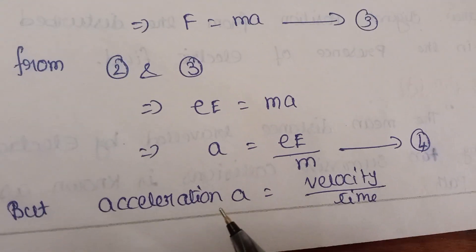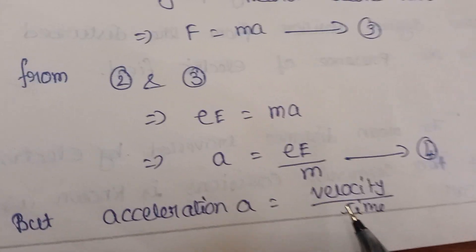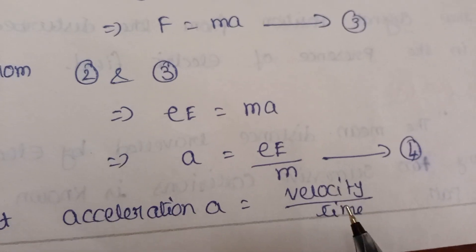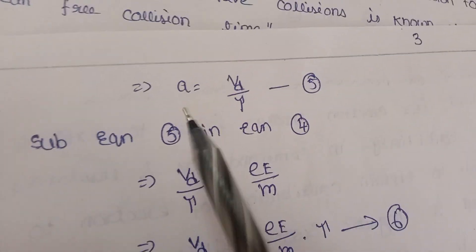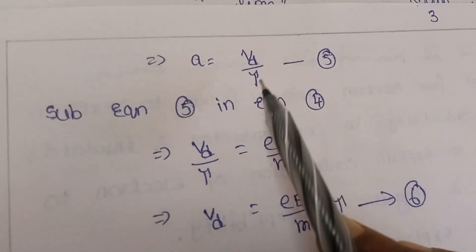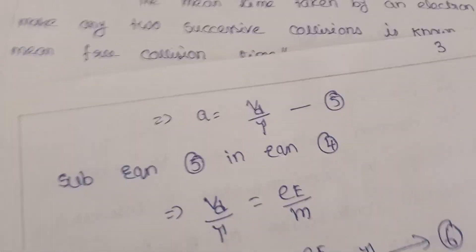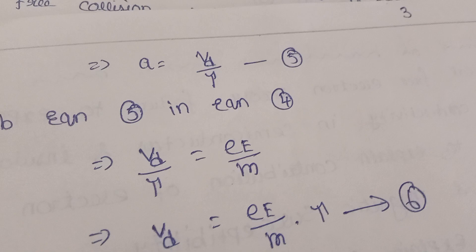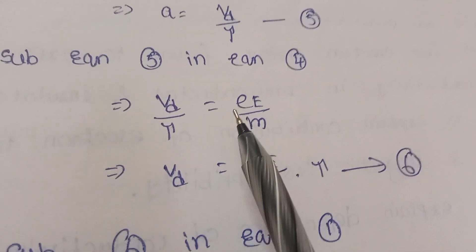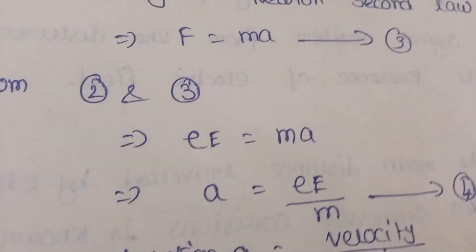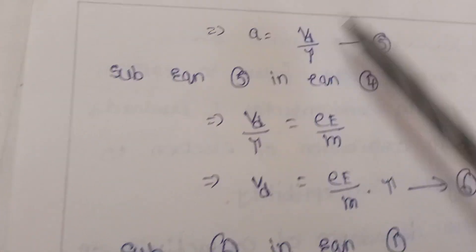Acceleration a is equal to the rate of change of velocity, which can be written as v_d divided by tau. So acceleration a = v_d / tau, where v_d is the drift velocity and tau is the relaxation time. We already know that a = eE/m and a = v_d/tau.